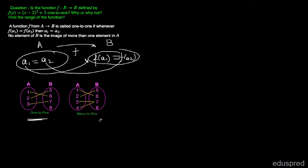Now consider a second example: many-to-one. Here two values of the domain are mapped to a single value in the range. So 3 is mapped to 7 and 4 is also mapped to 7, so that single value in the range, that is 7, is mapped to 2 values in the domain. This is a many-to-one function and not a one-to-one function. For a one-to-one function you need to have a distinct image in the range.